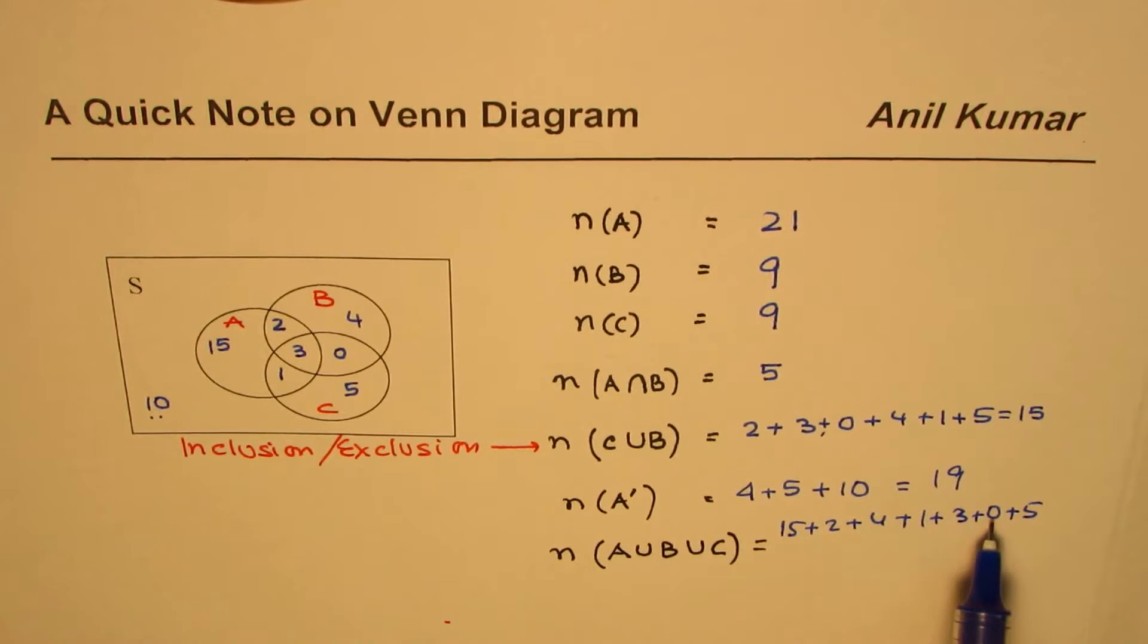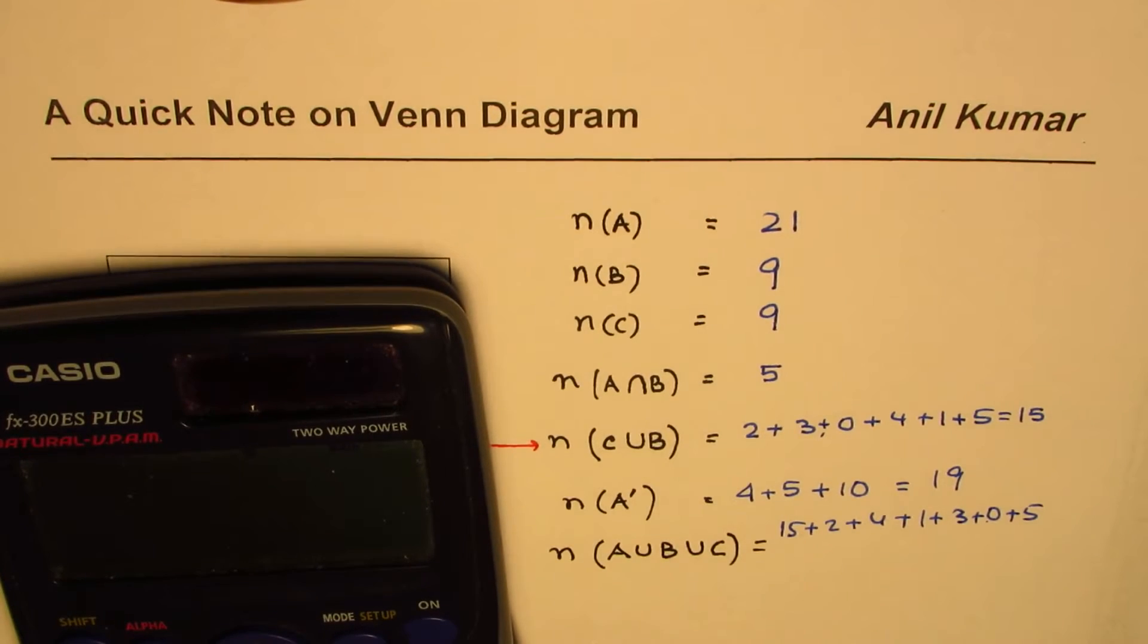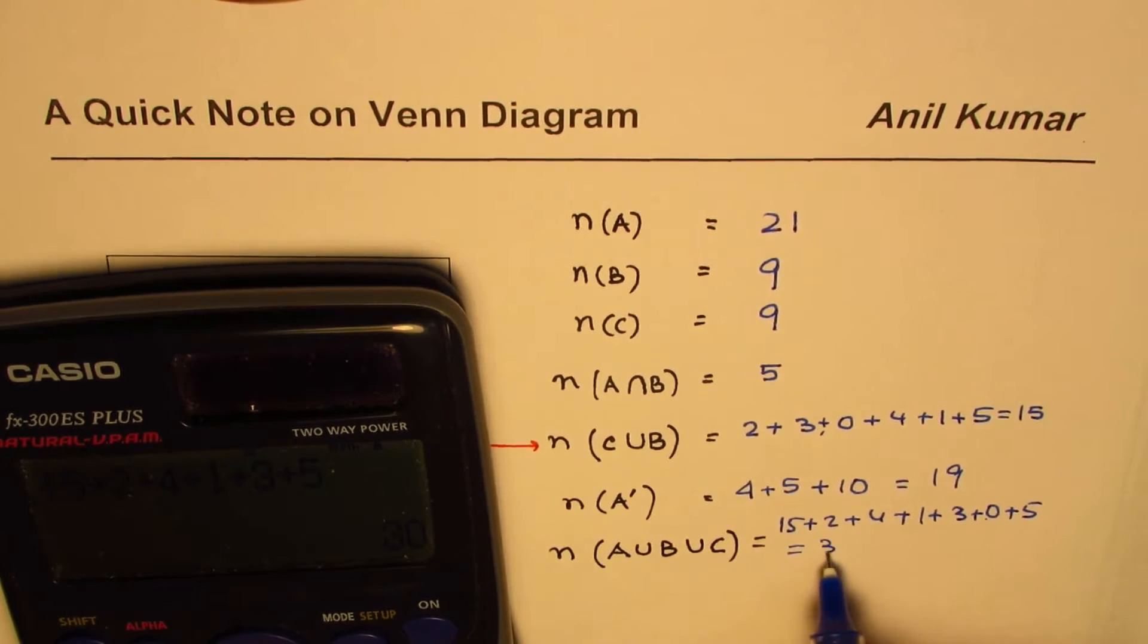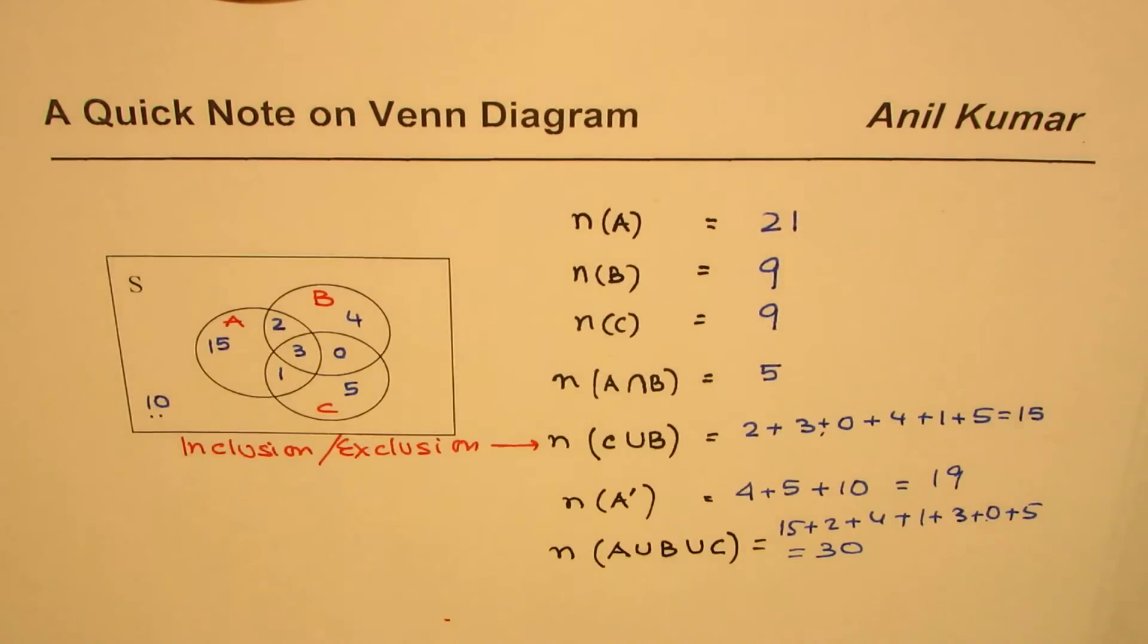We have 15 plus 2 plus 4 plus 1 plus 3 plus 5, and that is 30. So that is equal to 30 elements.